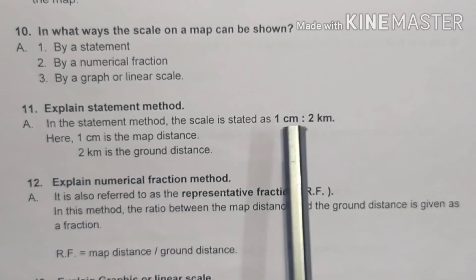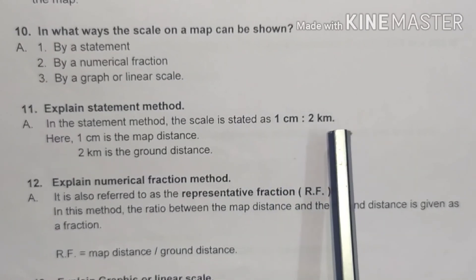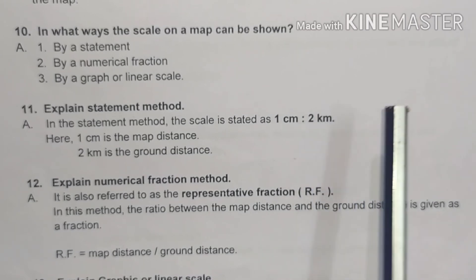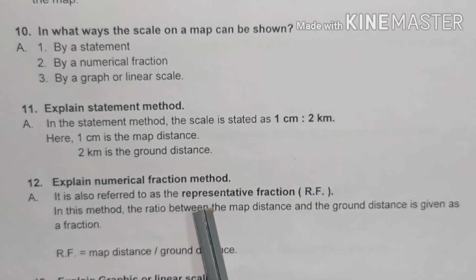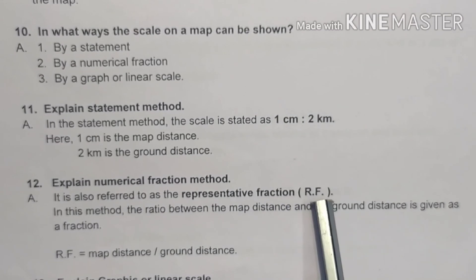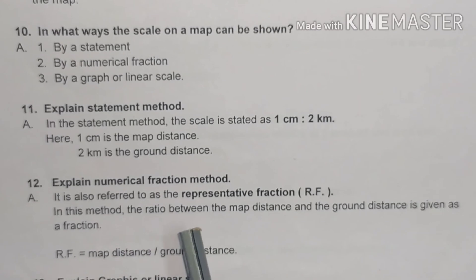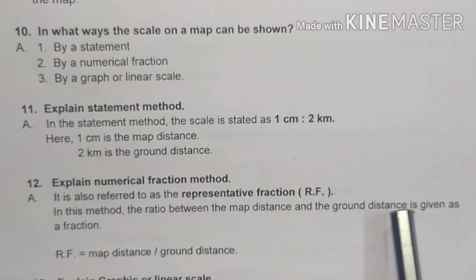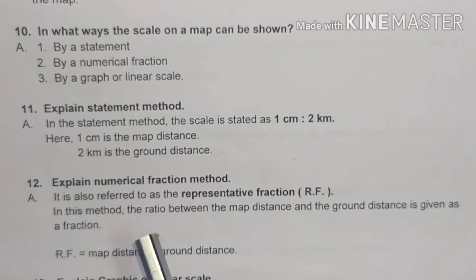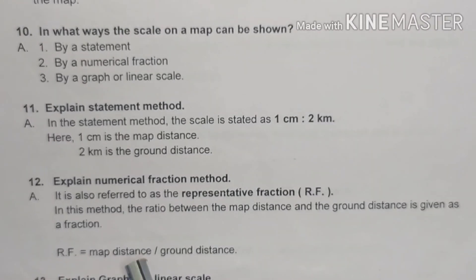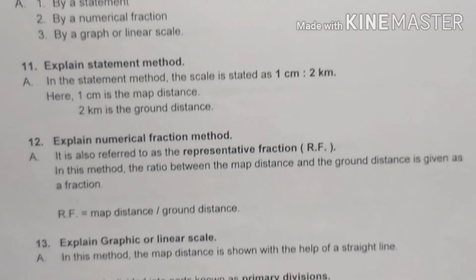For example, if the map distance is 10 centimeters, then the ground distance is 2 × 10 = 20 kilometers. Twelfth question: explain the numerical fraction method. It is also referred to as the representative fraction, or RF. In this method, the ratio between the map distance and the ground distance is given as a fraction. RF = map distance ÷ ground distance.